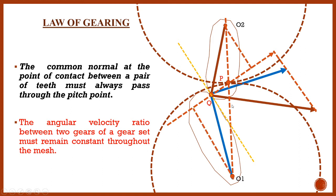I will draw two perpendiculars: O1M perpendicular on this common normal, and O2N again perpendicular on this common normal. O1M makes an angle alpha with O1Q, and O2N makes an angle beta with O2Q. This total angle is beta and this total angle is alpha. We will find the same angles in triangles EQC and EQD.